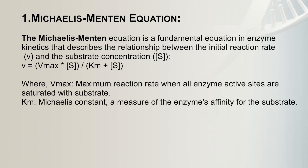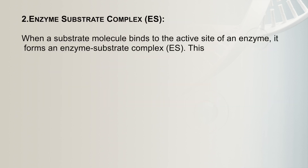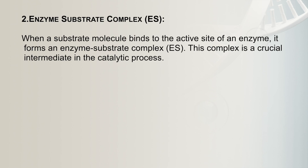Before going into the details of enzyme kinetics, let us go through some basic concepts and terms. The first term is the Michaelis-Menten equation, which is the most fundamental equation in enzyme kinetics. It describes the relationship between the initial reaction rate and the substrate concentration, expressed as: V = Vmax × [S] / (Km + [S]). Vmax is the maximum reaction rate where all enzyme active sites are saturated with substrate, whereas Km is the Michaelis constant, a measure of the enzyme's affinity for the substrate. The next term is enzyme-substrate complex: when a substrate molecule binds with the active site of an enzyme, it leads to formation of the ES complex, which is a crucial intermediate in the catalytic process.